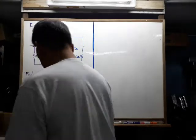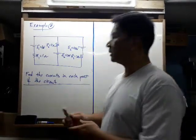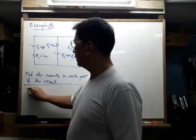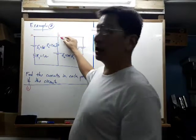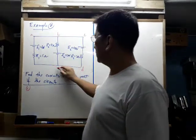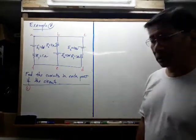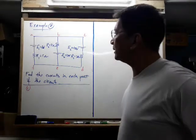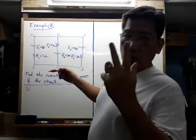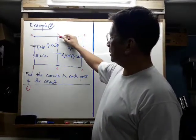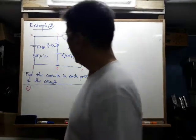We go step by step using the method we already know. Step one is to label. Starting from the upper left-hand side: A, B — now we have a junction — C, D, E, F, and back to F. Then we need to label the currents. It's more complicated now because we have junctions at B and E, giving us three currents.